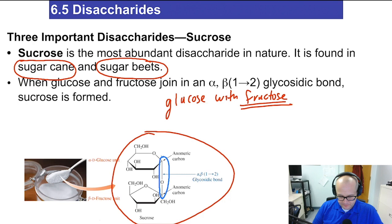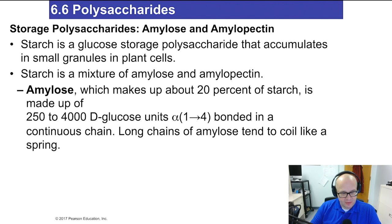And that was our introduction to disaccharides — a short but very important chapter section. I expect you to be able to identify maltose, lactose, and sucrose by looking at them, circle the glycosidic bond, point out any anomeric carbons, and indicate if the bonds are alpha or beta. With that, that's the end of this part of the chapter. I'll come back with my next video to finish off chapter six. Good luck and good chemistry!